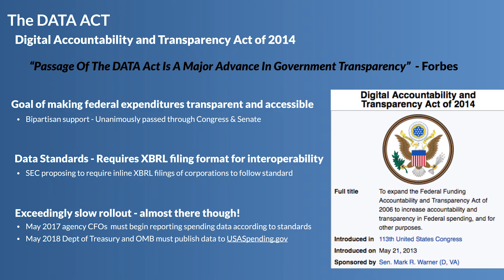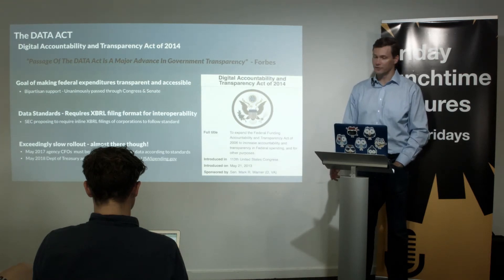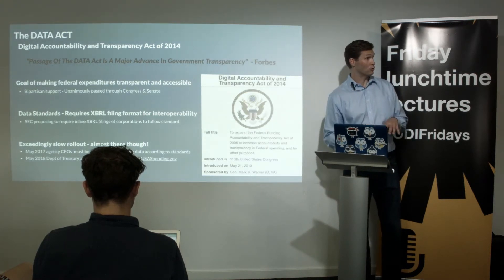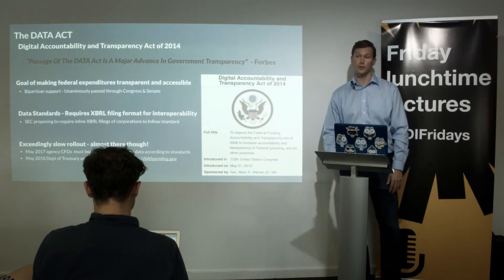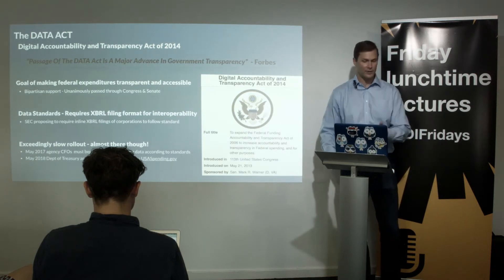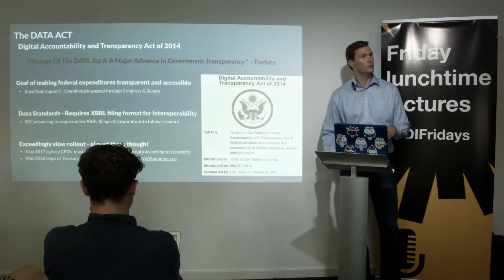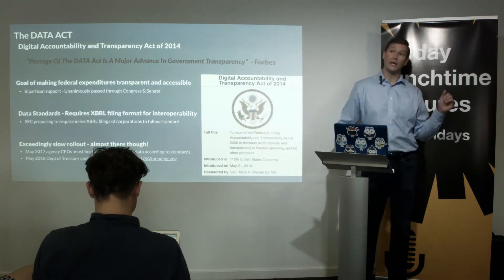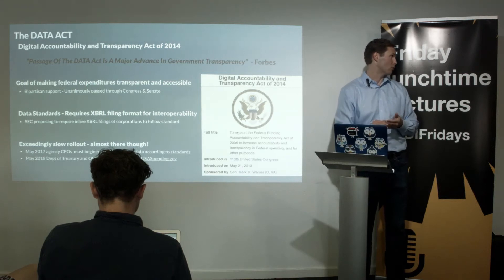The first major legislation was the DATA Act of 2014 — the Digital Accountability and Transparency Act. Forbes called it 'a major advance in government transparency.' The point was to make federal expenditures and spending transparent and accessible. It passed unanimously in both Senate and Congress — very few things pass unanimously in a politically charged environment — because who can disagree with making government spending more efficient and transparent? A key feature was very clear data standards — agencies could no longer report in whatever format they liked; they had to follow the XBRL format for interoperability and machine readability.